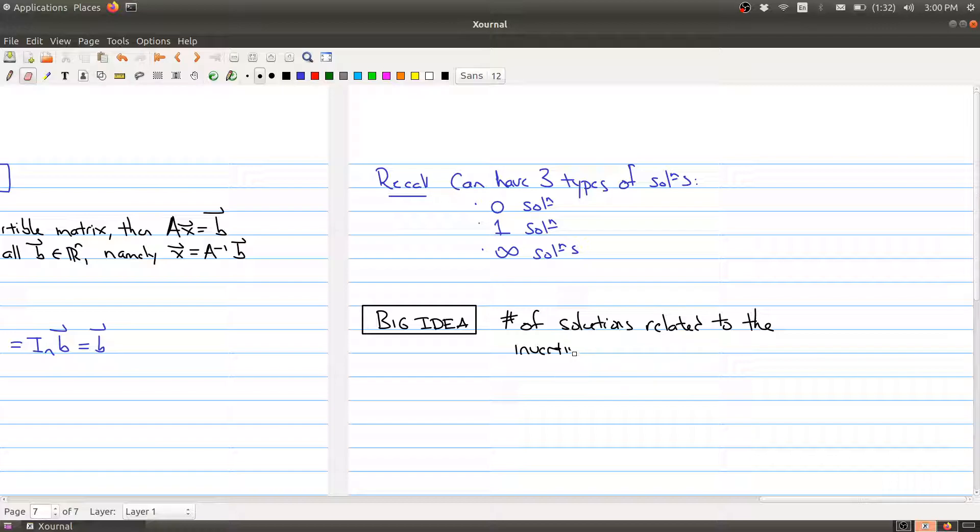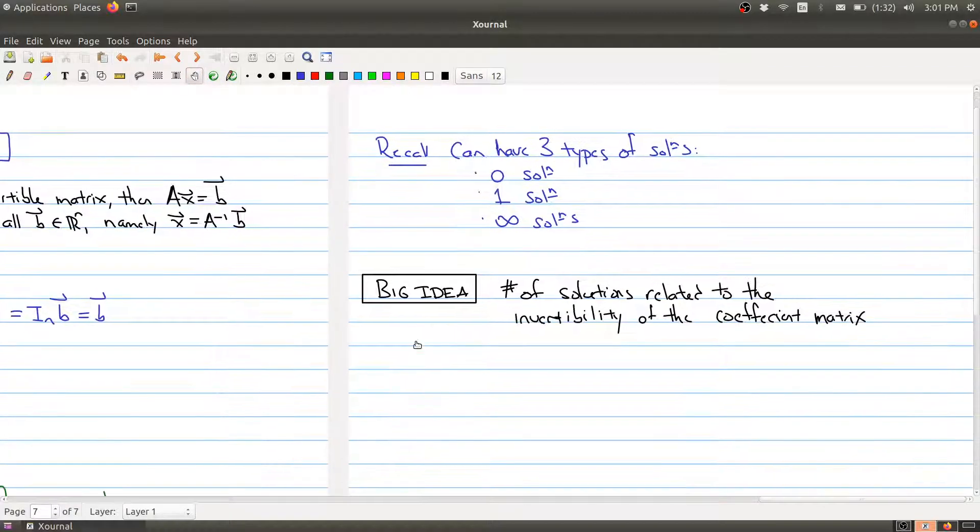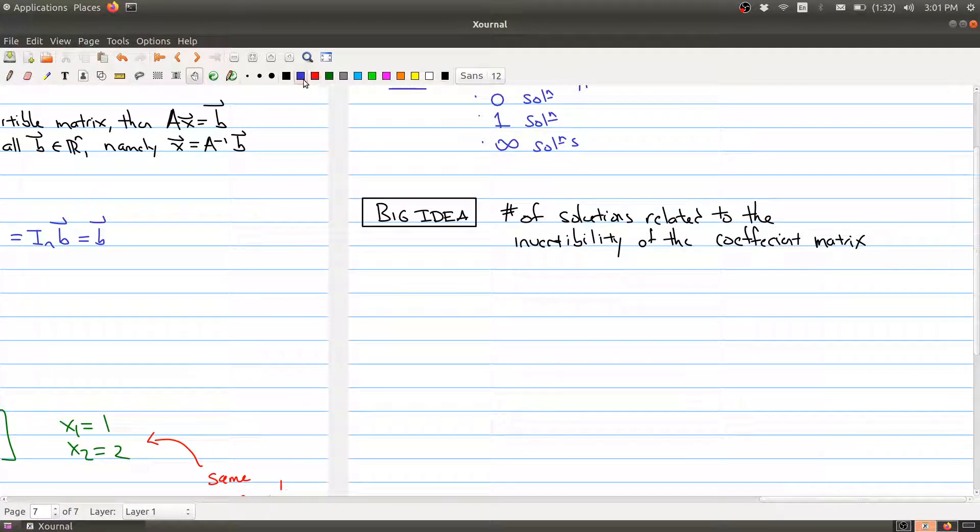Invertibility, and hopefully I can spell this right. It's a problem when you don't have a spell checker built into your tablet. Invertibility of the coefficient matrix. So that's kind of the big idea here. So let's make this a little bit more clear. Here we kind of have a bunch of concepts that are all now linked.